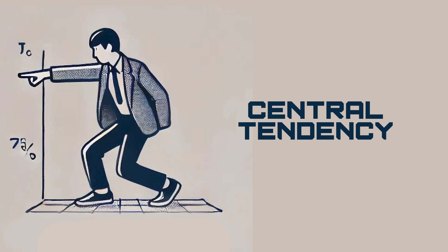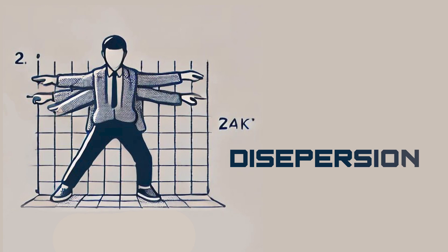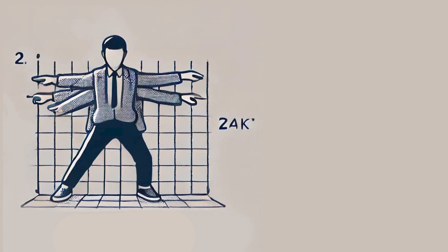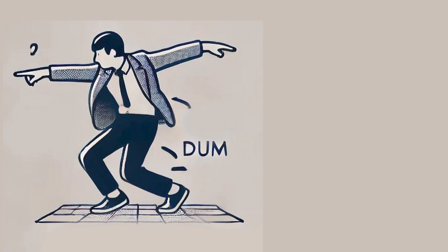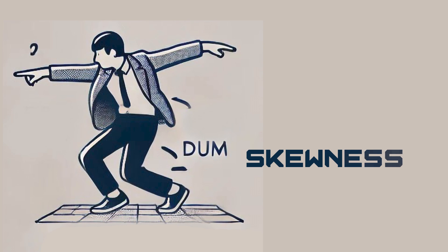The second is the dispersion around the data — when somebody is dancing, how big steps is he taking on the left and right, that's dispersion. The third is on which side is he tilting more, the left side or right side, which means where are the outliers — that's the skewness.